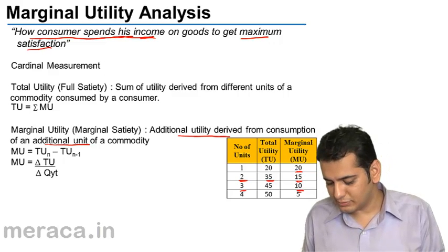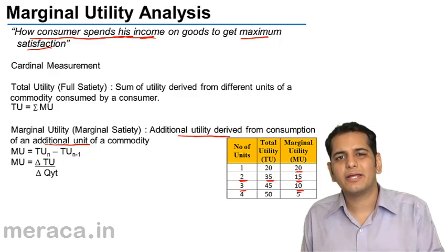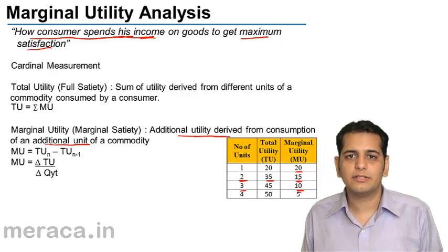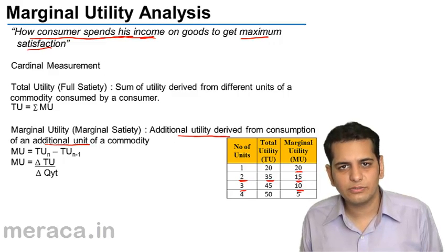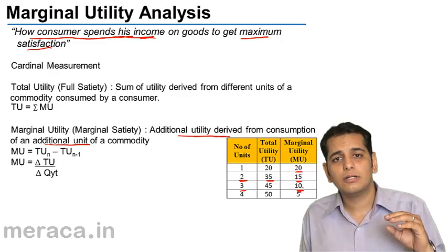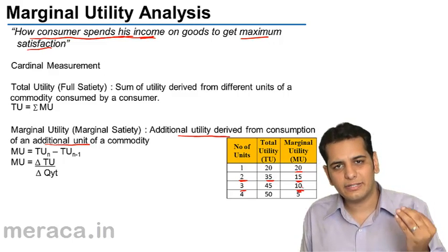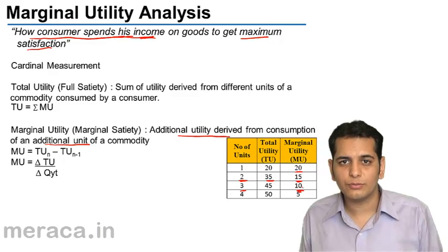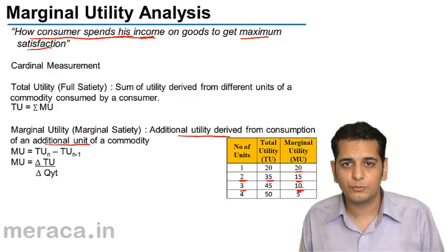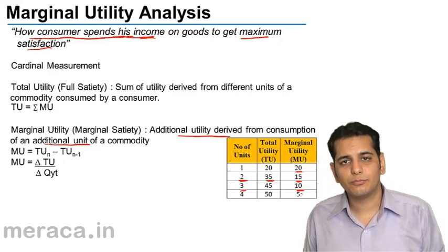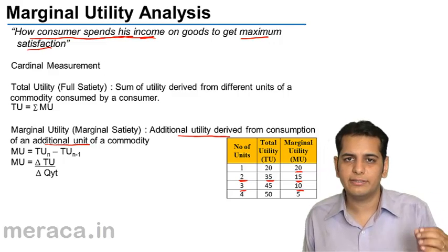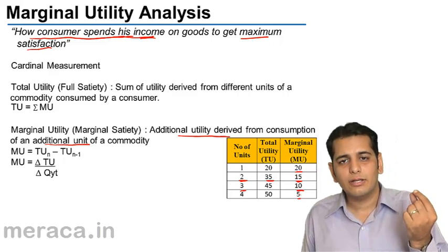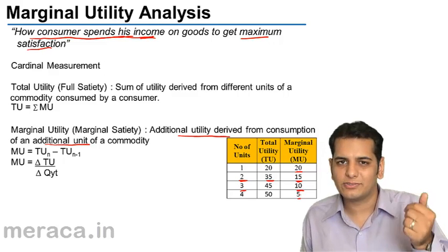Marginal utility for the second unit was 15, because you derived a satisfaction level of 15 from the second unit of consumption. When you consume the third unit, you derive a satisfaction level of 10. When you consume the fourth unit, you would still derive satisfaction — the marginal utility from the fourth unit of the commodity, the ice cream, would be 5. So, marginal utility is extra utility derived from one extra unit of consumption.